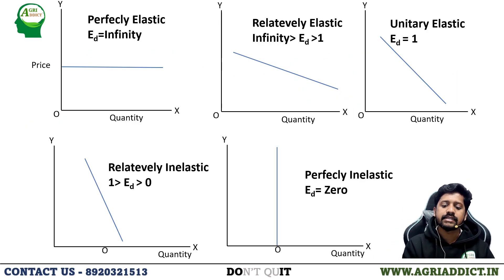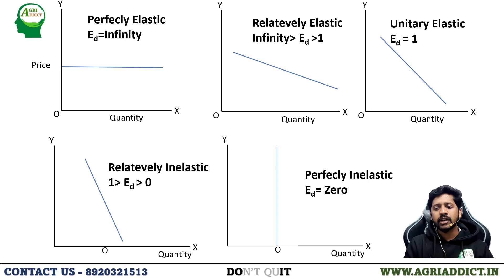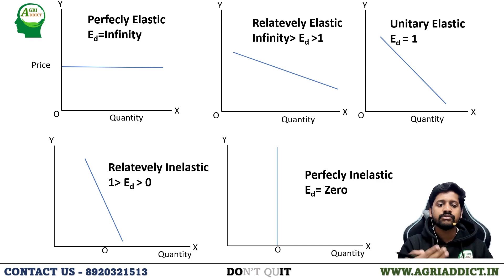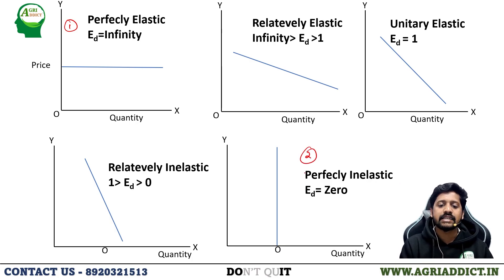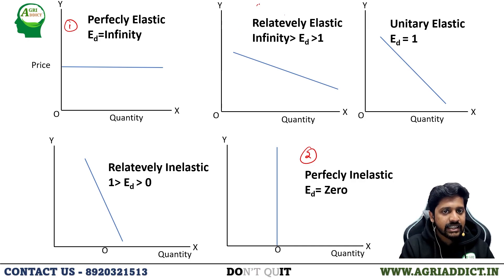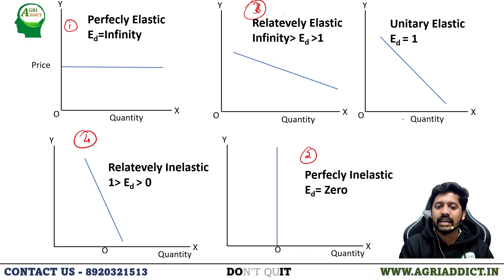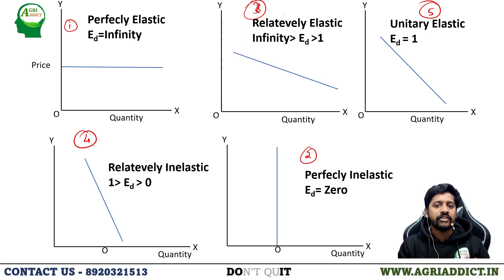Once we arrive at the elasticity value, we must interpret it. There are five extents of elasticity: perfectly elastic and perfectly inelastic are the two extremes. In between there are relatively elastic, relatively inelastic, and in the middle, unitary elastic. So there are five extents in general.